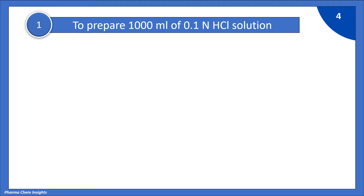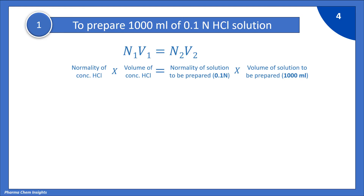First example: to prepare 1000 ml of 0.1 normal HCl solution. Using the normality equation N1V1 = N2V2, where N1 is the normality of concentrated HCl, V1 is the volume of concentrated HCl, N2 is the normality of the solution to be prepared (0.1 normal), and V2 is the volume of solution to be prepared (1000 ml).